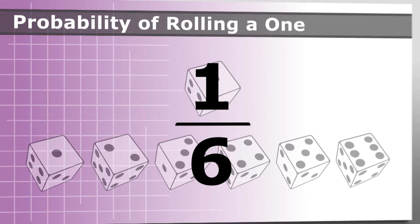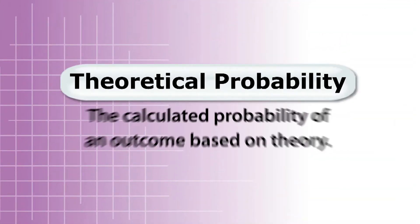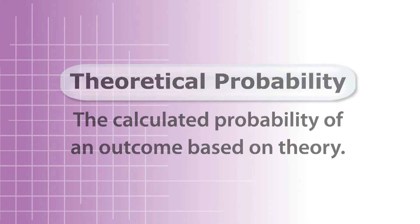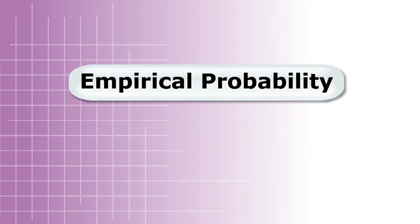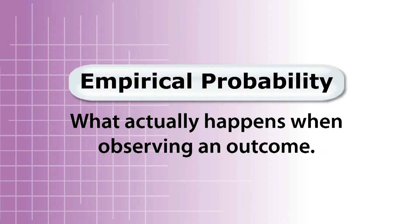Probabilities come in two different ways. We have theoretical probability. Theoretically, if I roll a die six times, one time I'm going to get a one, one time I'm going to get a two, one time I'm going to get a three, et cetera. That's theoretical. But in all practicality, when I actually roll that die six times, chances are I'm going to get the same thing twice. That's called empirical probability — what actually happens.